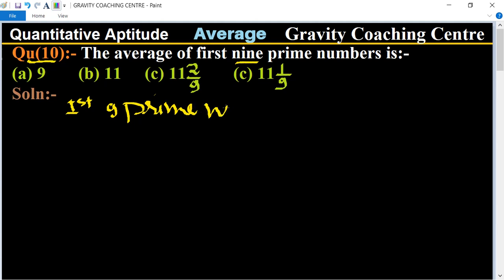Prime numbers are: first one is 2, 3, 5, 7, 11, 13, 17, 19, and 23.